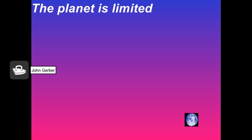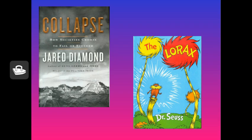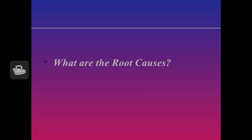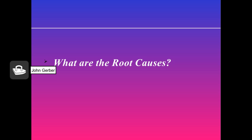The bottom line is the planet is limited. There was a wonderful book published in 2005 called Collapse by Jared Diamond, going into the complexities of what is happening to us. It's the same story as The Lorax — who would have thought we'd need to cut down the last tree because everybody has a need? Because there's general awareness and very little being done, we have to ask: what are the root causes of this problem?